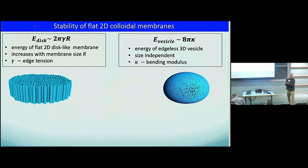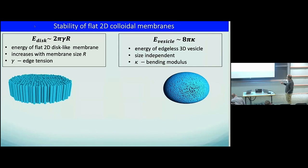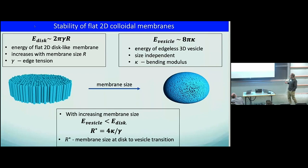As the sheet gets larger, the edge energy increases — it's the circumference times the line tension. You can eliminate this edge energy by folding the sheet into an edgeless vesicle, but of course it takes some energy to bend the sheet into a closed vesicle. That bending energy is actually independent of vesicle size. Locally the curvature goes as one over r squared, and when you integrate over the entire vesicle, you get a constant proportional to kappa — how difficult it is to bend the sheet.